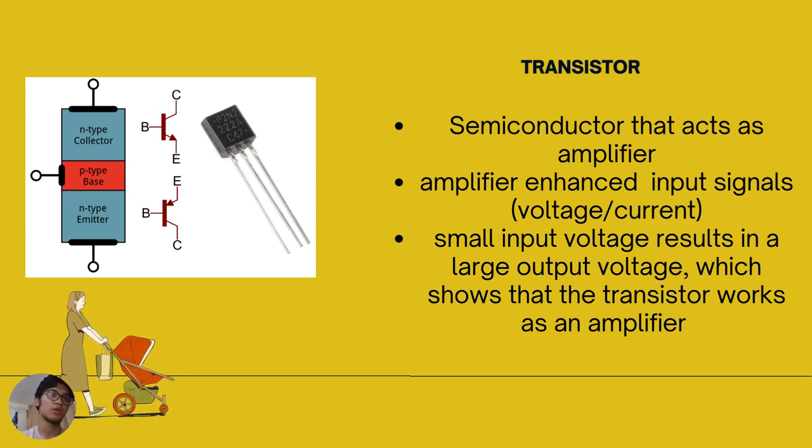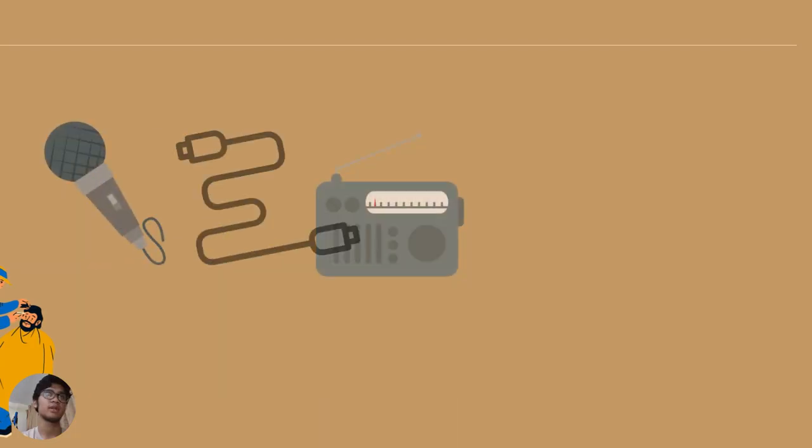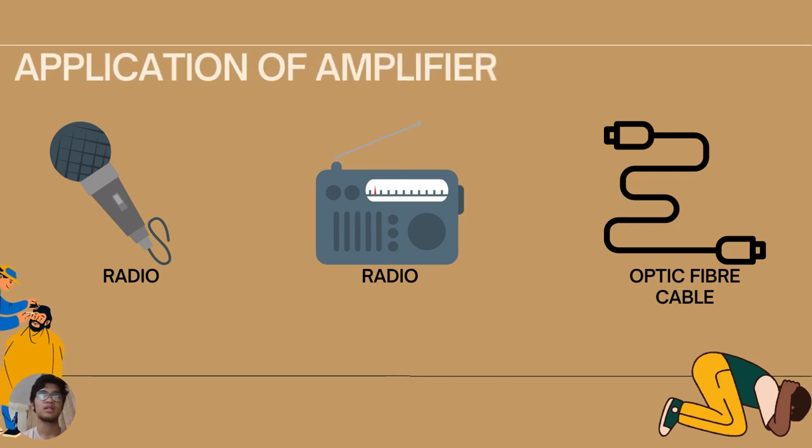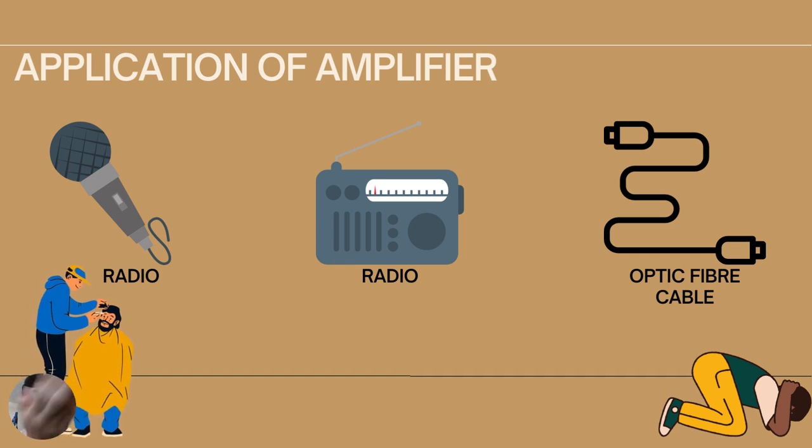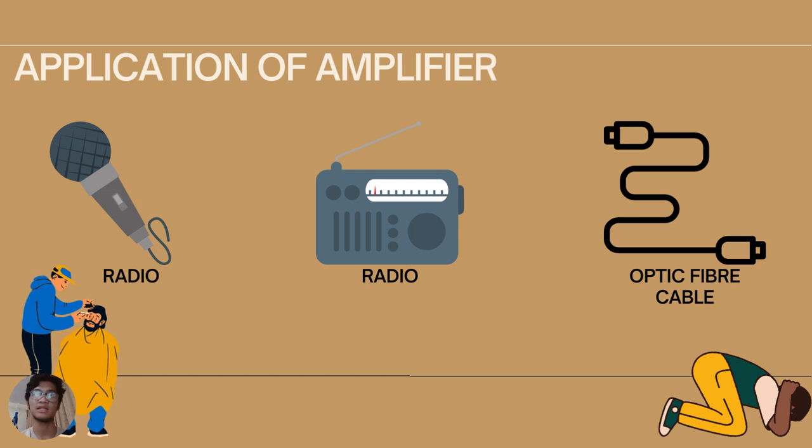We are going to look at the application of an amplifier. There are three main applications that we use commonly in our daily life such as a microphone, a radio, and an optic fiber cable. An amplifier can be used in long distance communication because the intensity of the signal obtained at the output will be high.